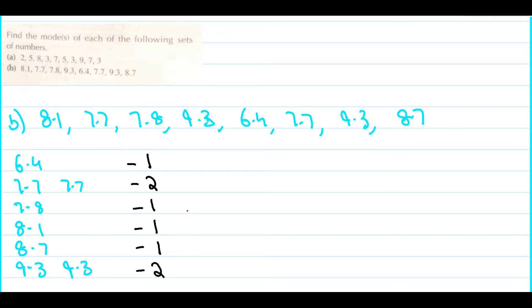Now, in this case, there are 2 numbers that have occurred twice. In such cases, the mode would be both 7.7 and 9.3. So, that's it for today. Thanks for watching.